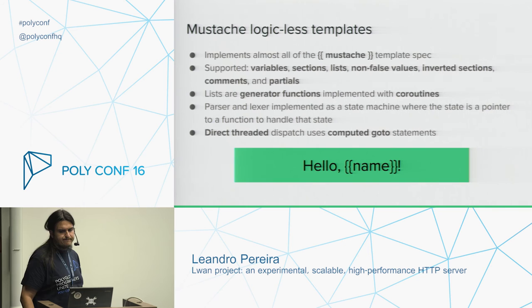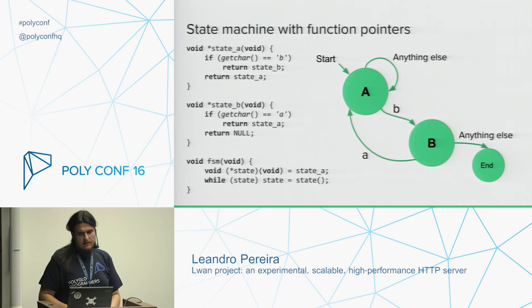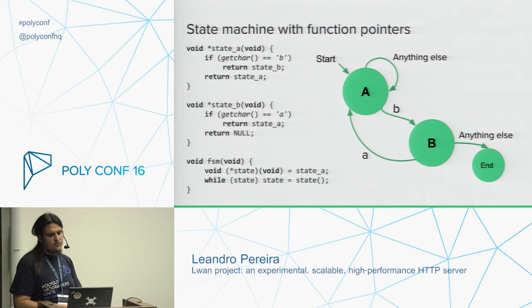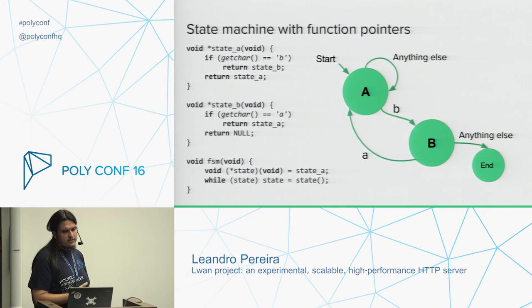This way of implementing a state machine is quite unusual, so here's how to do it. The fsm function initializes the current state to point to a state_a function, and calls the state function passing itself. If the state changes to any other state, it's called in the next iteration of the loop. If it returns null, the state machine ends. I did not invent this technique — I adapted it from Go to C after watching Rob Pike's talk on lexing with Go. It's a highly recommended talk, pretty easily found on YouTube.